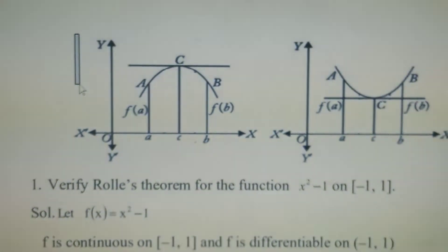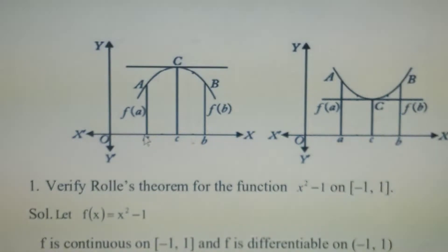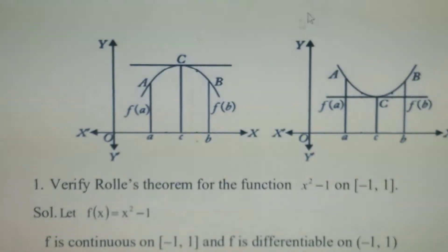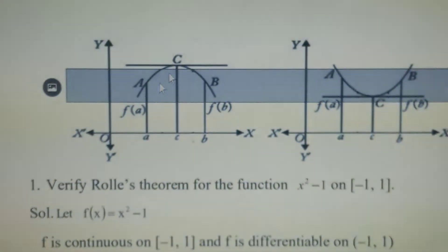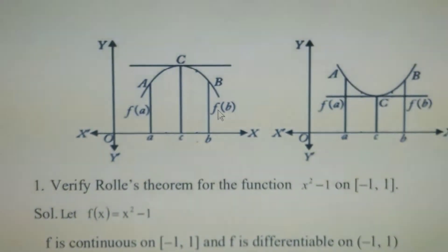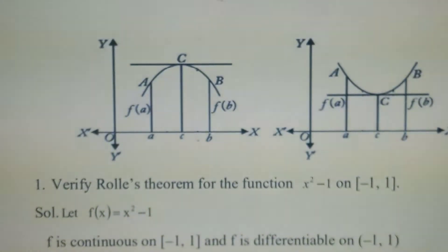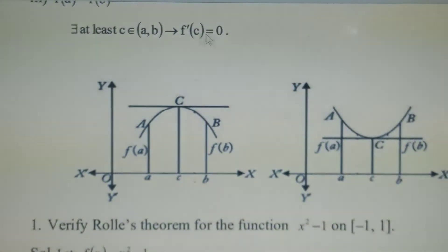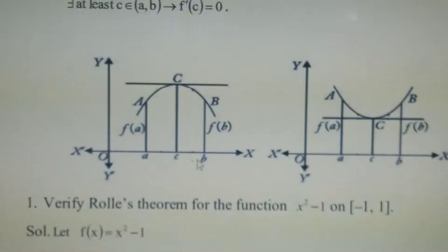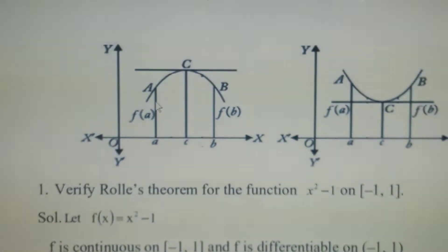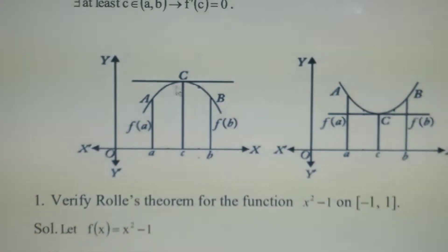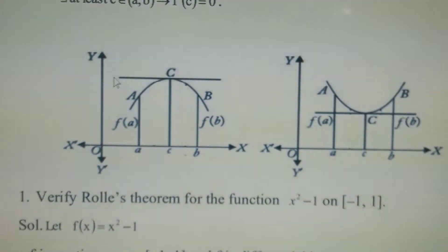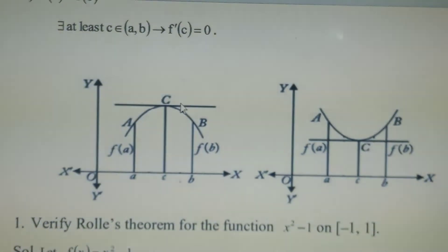This is the geometrical interpretation of Rolle's Mean Value Theorem. Suppose you consider two points a and b on the x-axis. We have capital A, this is f(a) and this is f(b). If you draw a line here, these two are equal — that means f(a) = f(b). From this definition, f'(c) = 0 means at any point c, the slope is parallel to the x-axis. So draw a tangent line to this curve on [a,b]; consider any point c. This tangent line is parallel to the x-axis, meaning the slope of this line is 0, that means f'(c) = 0.